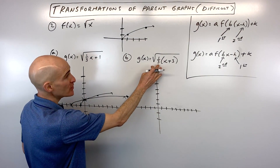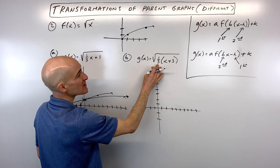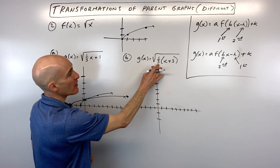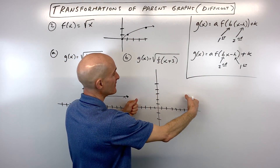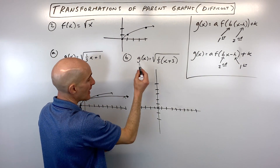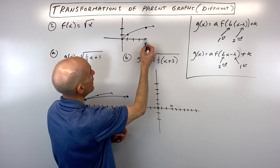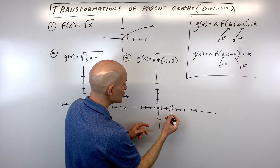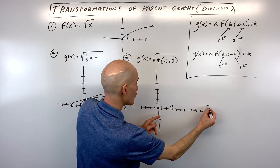For letter B, the 1/3 is factored out, putting it in the first form, so we do the horizontal stretch or compress first. The 1/3 has the reciprocal effect, multiplying x-values by 3: (0, 0) stays at 0; x = 1 becomes x = 3; the point (4, 2) becomes (12, 2). Y-values remain unchanged as we stretch horizontally.